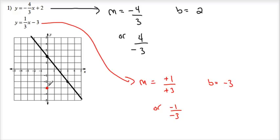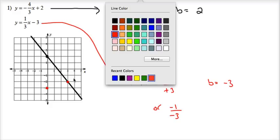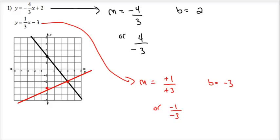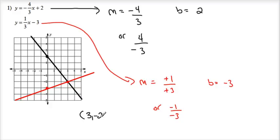Using slope 1 over 3, I go up 1, right 3: 1, 2, 3. And what happens? They intersect! Since I found my intersection point, I know where they meet. So there's that coordinate — the intersection. My solution is one simple solution: my graph intersects at the coordinate 3, negative 2. So they're going to intersect at 3, negative 2. That's what the question is asking — where do these two linear equations intersect? The answer is 3, negative 2. That's doing it graphically.